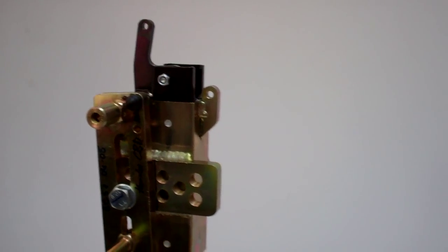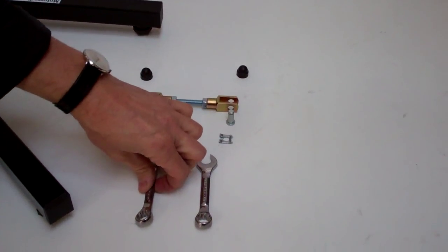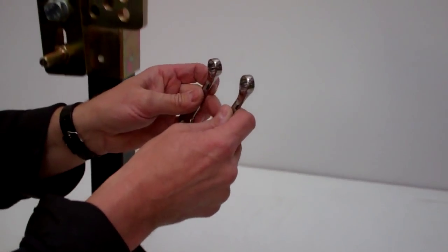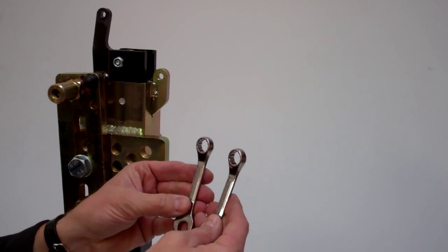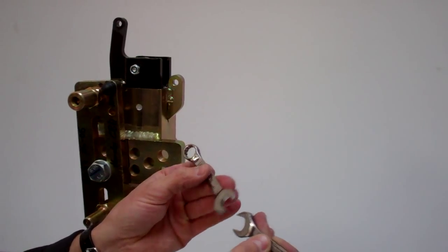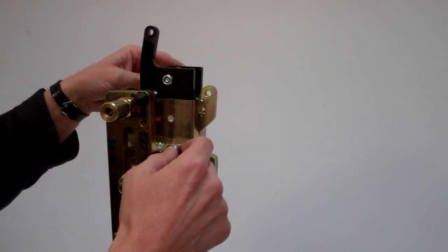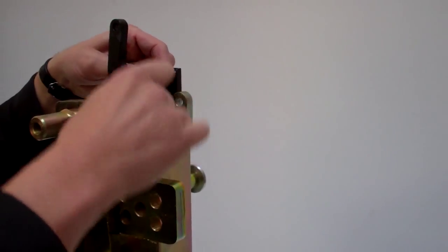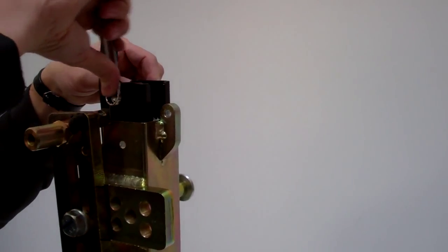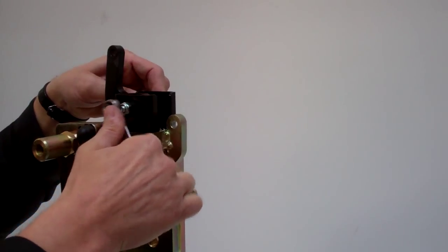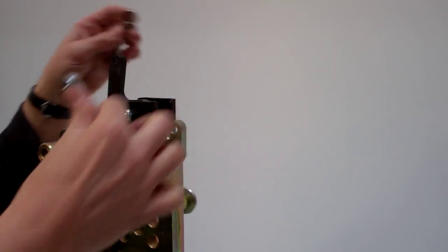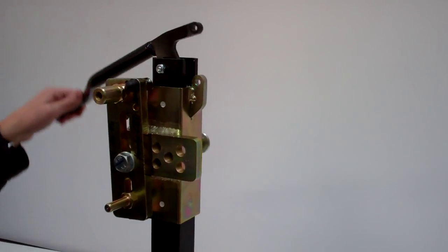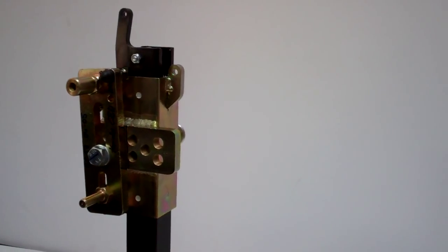Once in place, we use the only tools required: two 13 millimeter spanners, open-ended or ring key. We tighten to a snug fit, not over-tightening, as it might hamper the smooth action of the lever.